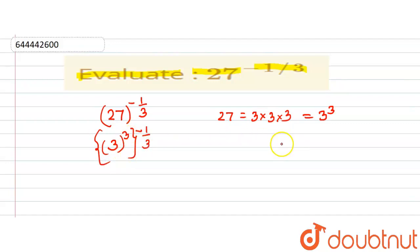Now we know that a to the power of m, whole to the power of n, can be written as a to the power of m into n. That means m and n are multiplied here.